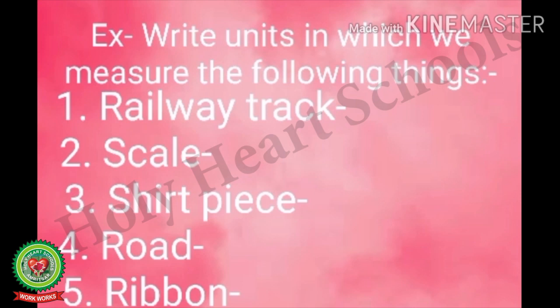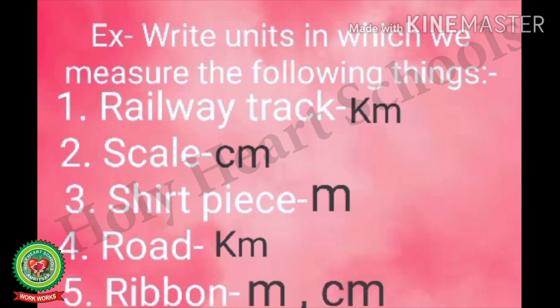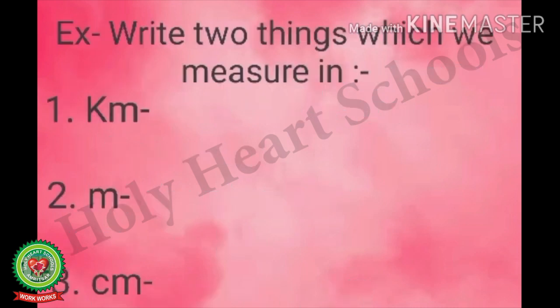Next exercise: write the units in which we measure the following things. Number one is railway track — we use kilometer. Number two is scale — we use centimeter. Number three is shirt piece — we measure in meters. Number four is road — we use kilometer, the biggest unit of length. Number five is ribbon — we measure ribbon in meters and centimeters.